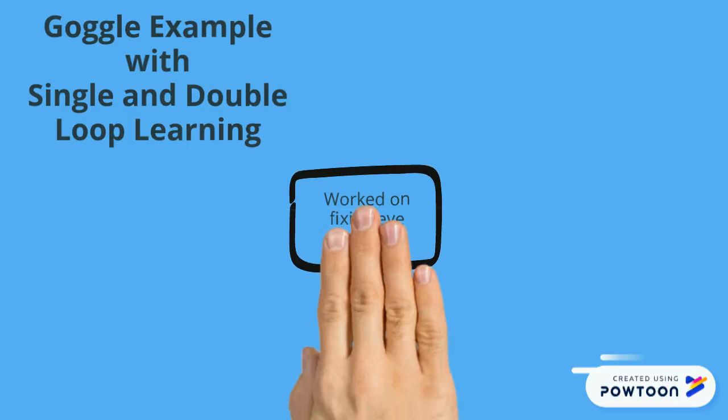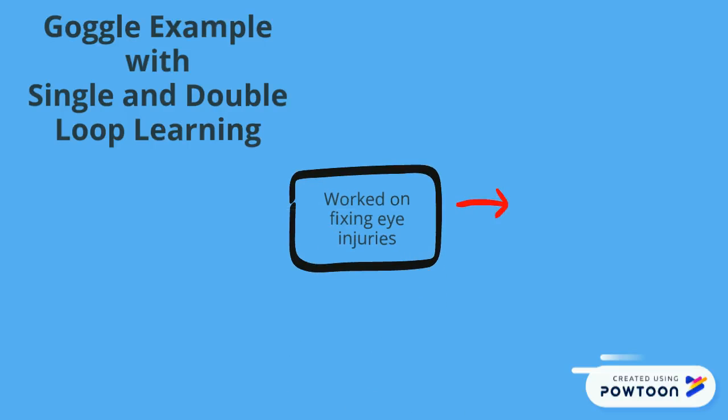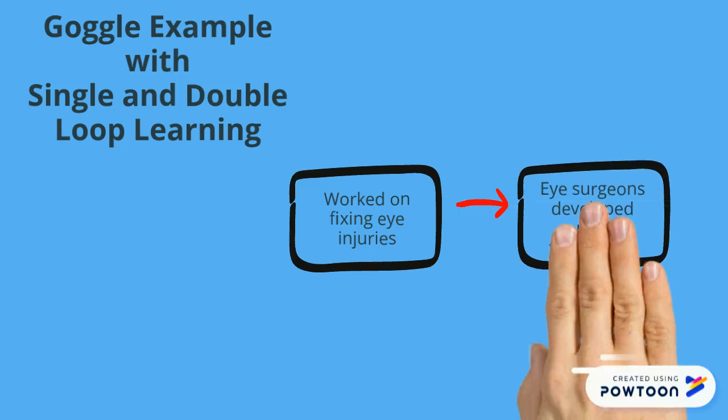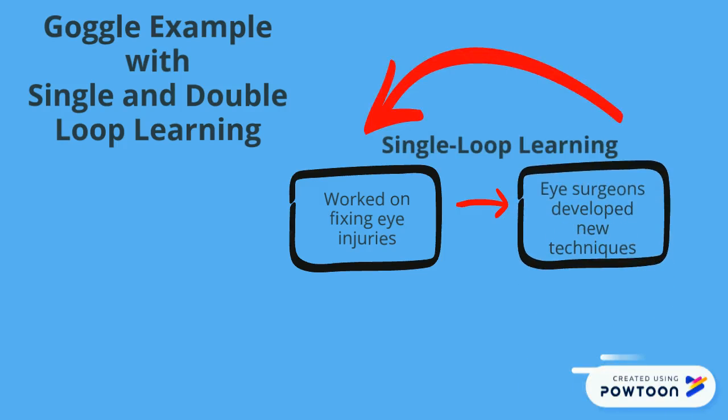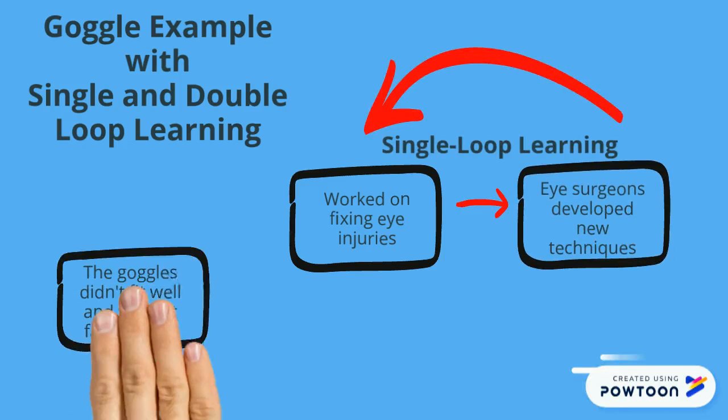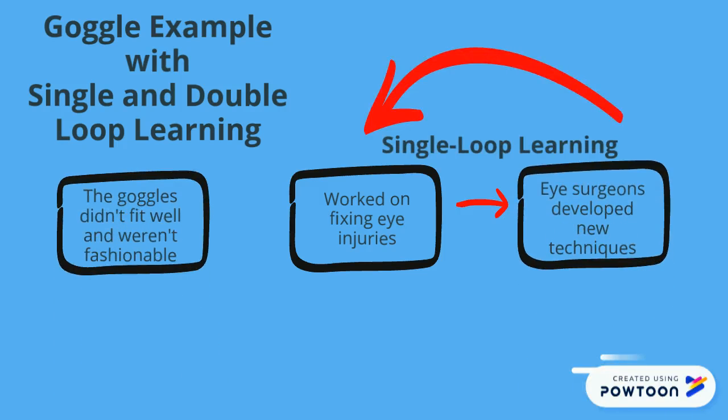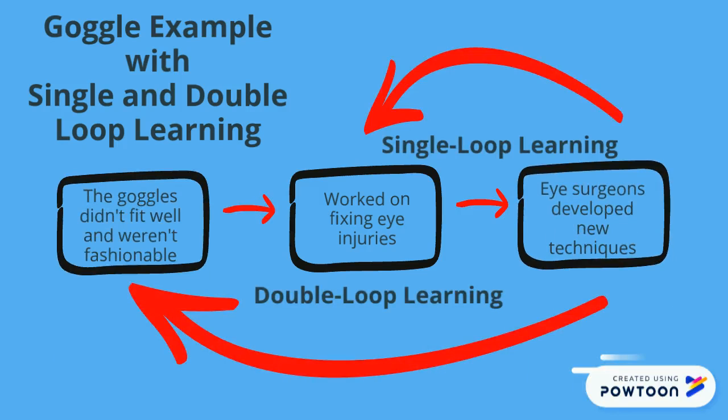The process of single-loop learning began when the doctors learned new techniques for fixing eye injuries. Double-loop learning began when the doctors asked why the eye injuries were so common and discovered that the soldiers didn't like their goggles and needed more comfortable and better-looking ones.